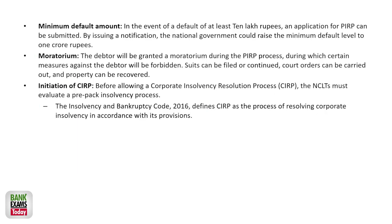The minimum default amount for PPIRP is 10 lakh and the maximum is 1 crore. Under the PPIRP process, the debtor is granted a moratorium of generally 120 days, during which certain measures against the debtor are forbidden. NCLT must evaluate the pre-packaged insolvency process before allowing a corporate CIRP — PPIRP cases are given priority.